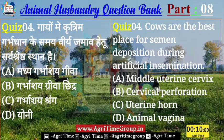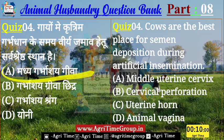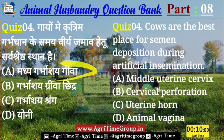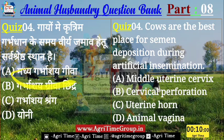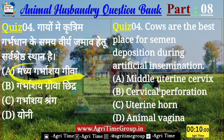Time up होता है, dear Agrarians। Quiz number 4 का जिन्होंने A answer comment किया है — यानि कि मध्य गर्भाशय ग्रीवा — उन सभी का answer right है। यहाँ पर सर्वश्रेष्ठ माना जाता है वीर्य जमा करना। चलिए बढ़ते हैं अगले question की ओर।